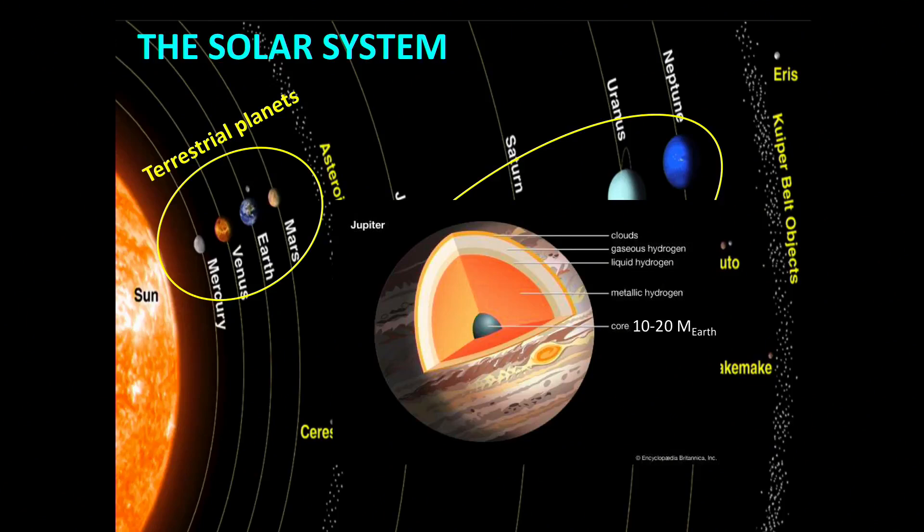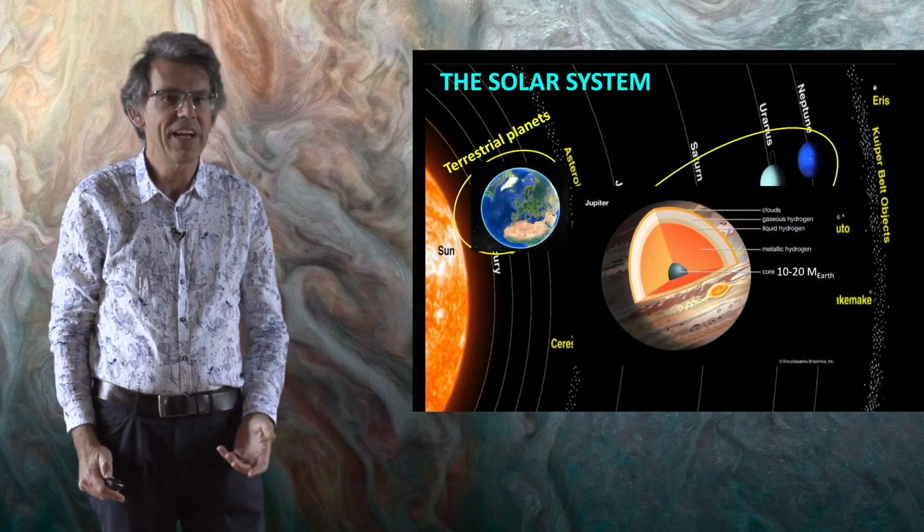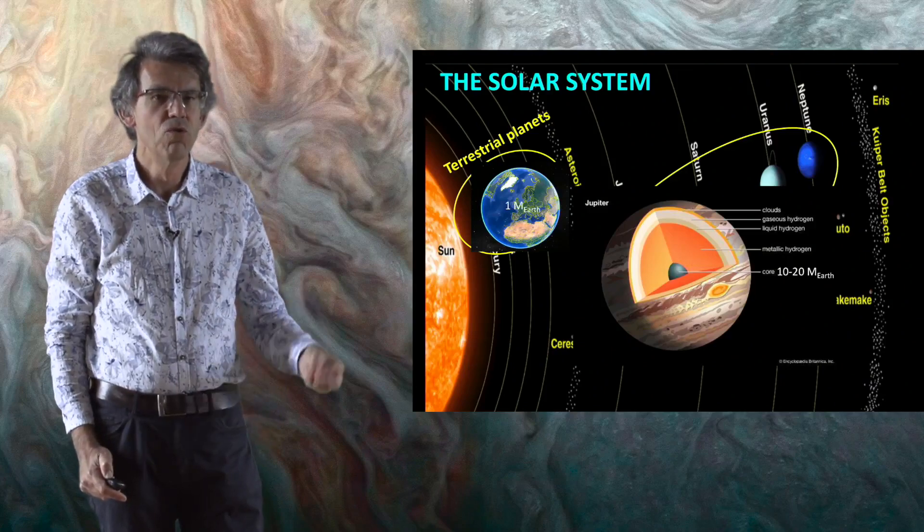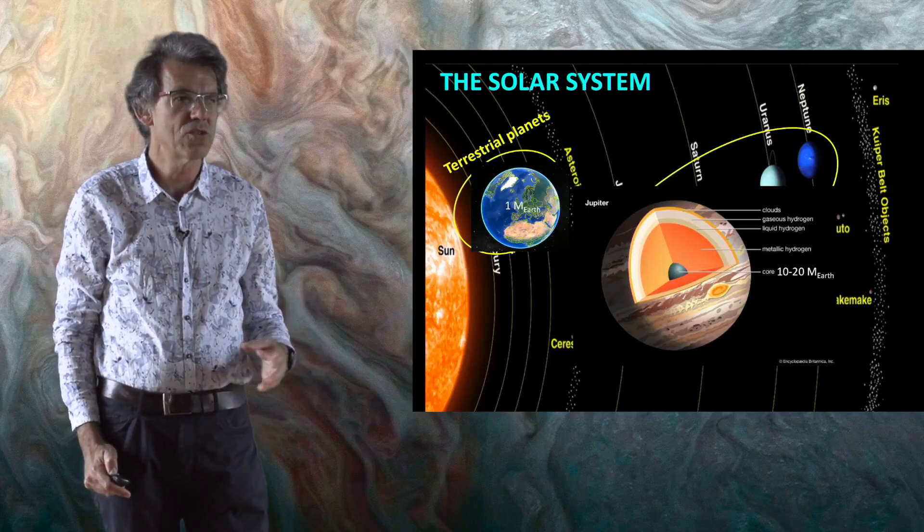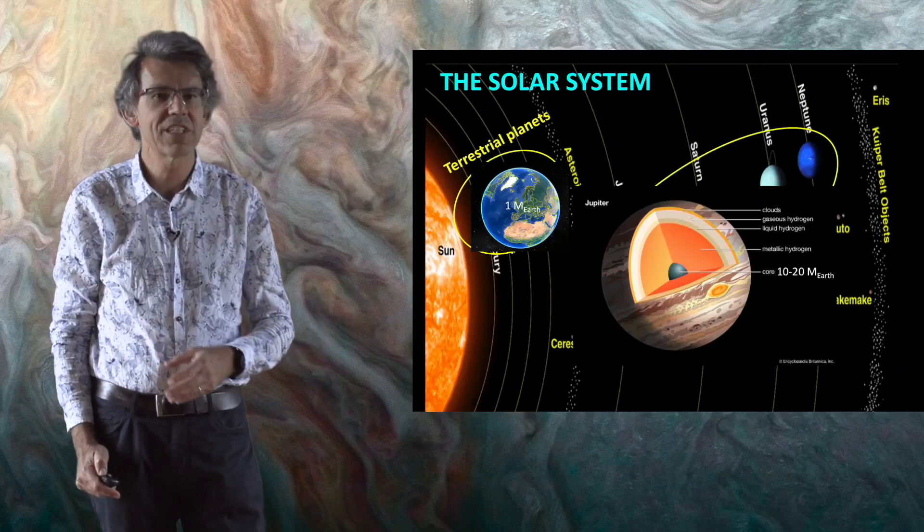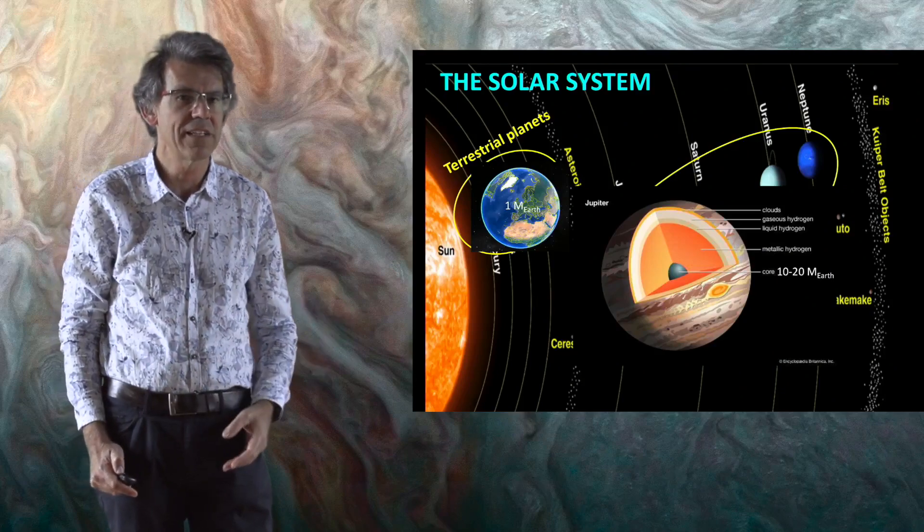These cores must have formed within the lifetime of the protoplanetary disk, so in a few million years, because they grabbed hydrogen and helium from the disk to build the giant planet around them. In the inner part, the Earth is one Earth mass, but we know that the Earth took several tens of millions of years to form, so a much longer time scale than the lifetime of the protoplanetary disk.